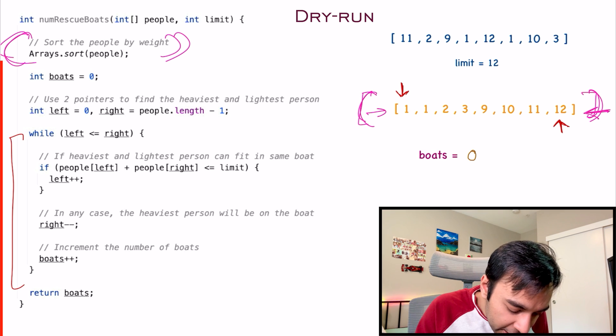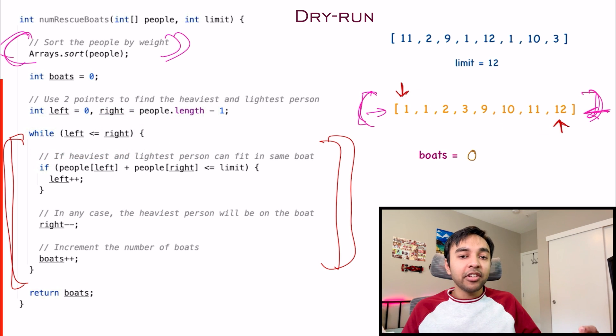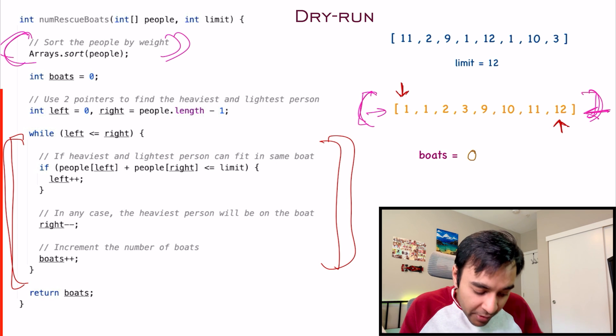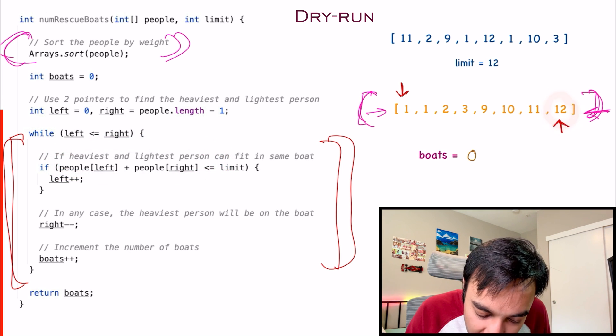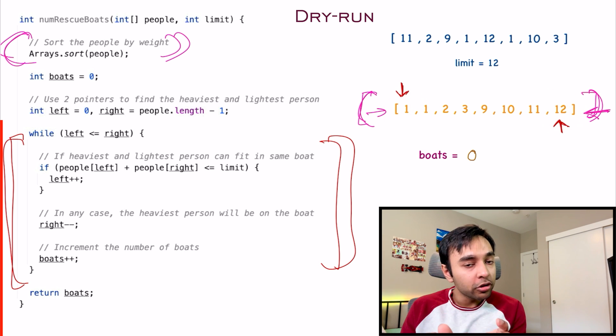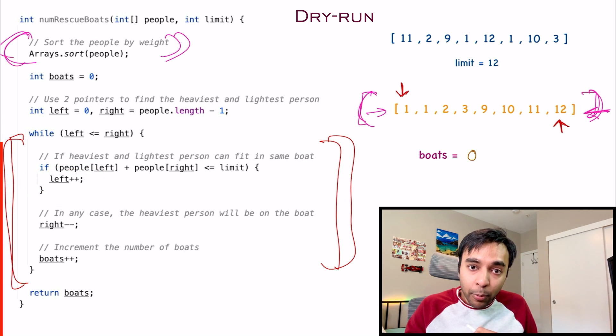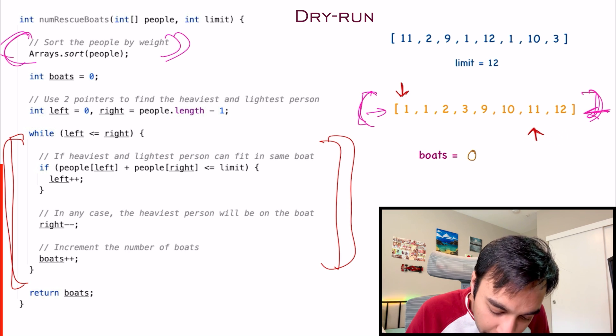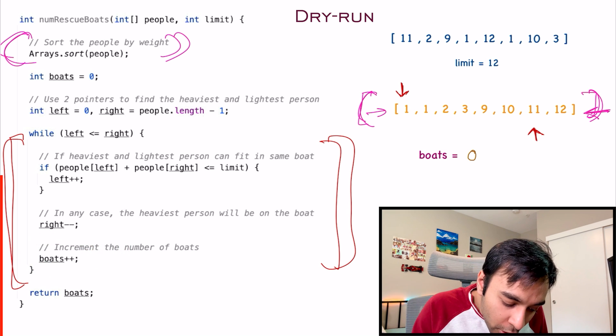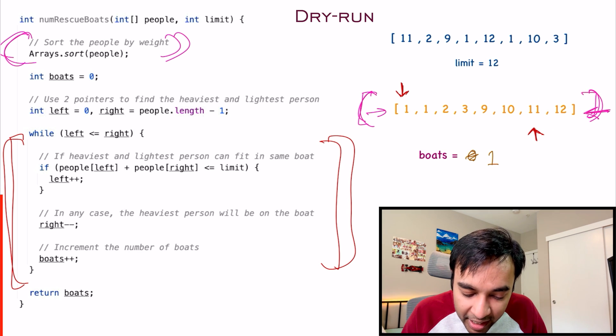Next, what you do is you run a while loop. This while loop will run until your left pointer is behind the right pointer, because that is when we know we need to stop. Now what do you do? You will try to put the heaviest and the lightest person on the same boat. We will try to see, 12 plus 1, that is 13. You cannot fit both of these people in the same boat. So what do I do? I don't do a left plus plus. I will just put this person 12 in the boat and then move ahead, because this person cannot be paired with anyone. So this right pointer moves one step backward and this person occupied a boat. We will do boats plus plus. This is telling me that I took care of one person and I have taken one boat up till now. Notice that I haven't picked up any person from the left side.